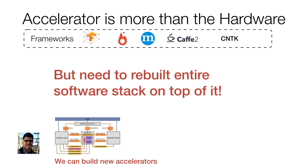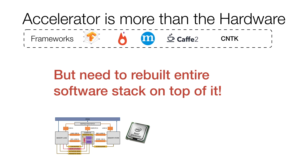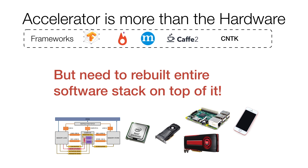This is not only a problem for Terry — it's a problem that everybody is facing. Big companies have more engineering power; Google can put a dedicated team to optimize for TPU. But small companies, startups, and research groups in universities are very talented and can come up with new hardware designs that are even more novel and better than what's already out there. The problem they face is that they still need to rebuild the entire software stack. Traditional deep learning software is built on top of CPUs and NVIDIA GPUs, but there are also problems supporting mobile phones, AMD GPUs, embedded devices like Raspberry Pi, FPGAs, and Google TPU-like custom accelerators.